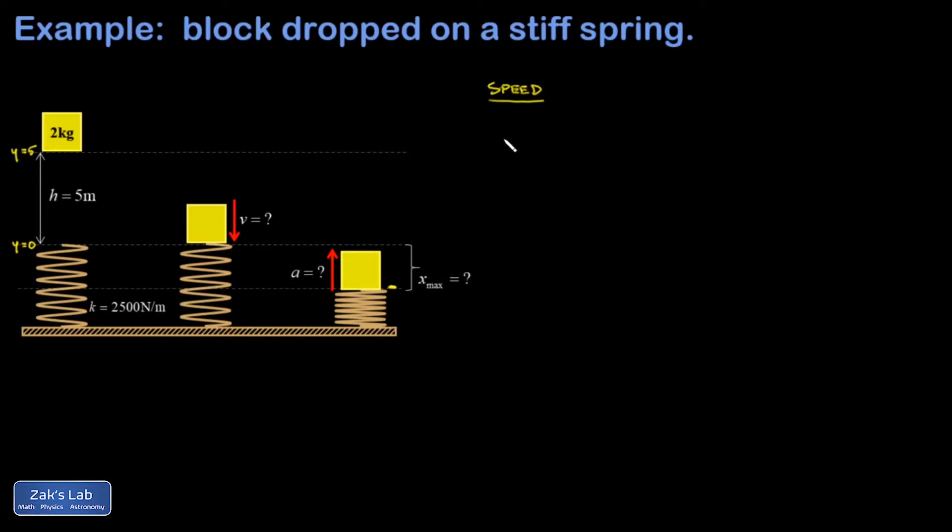So my speed question: I have in my initial state gravitational potential energy, mgy. In my final state, I have no more gravitational potential energy. I'm right there at y equals zero, and all my energy is going to be kinetic. Turns out the mass doesn't matter for this part.